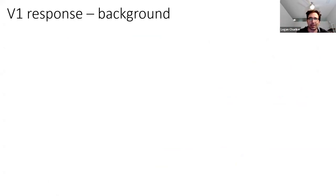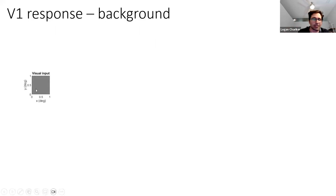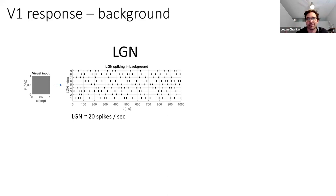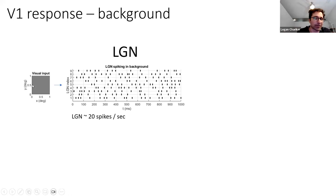Now we're ready to see how the model responds to input. I'm skipping a very big part, which is parameter determination — a whole other big story — and I want to focus on the dynamics. The first thing to see is how the model responds to a blank gray screen input. It turns out that LGN is supposed to fire quite a lot even in this case; intuitively, you want to detect both positive and negative changes in brightness, so LGN must be at some positive firing rate. LGN in background, stimulated by a gray screen, will spike at about 20 spikes per second.